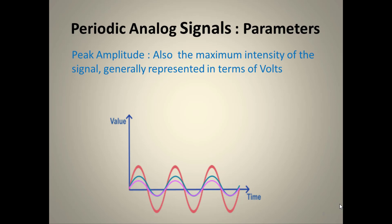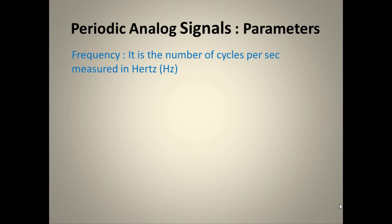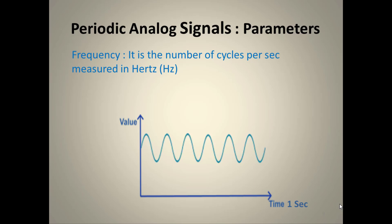Frequency is the number of cycles per second, measured in Hertz. For example, if we have a time period of one second and the first wave completes six cycles, the frequency is six Hertz. If the second wave completes three cycles in one second, its frequency is three Hertz.